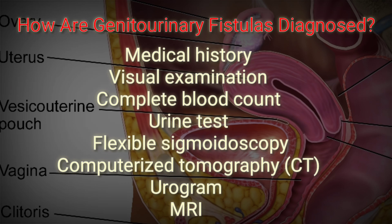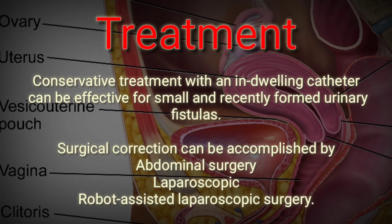Surgery is often needed to correct a fistula leading to the vagina. Conservative treatment with an indwelling catheter can be effective for small and recently formed urinary fistulas. Surgical corrections can be approached in different ways, including abdominal surgery or laparoscopic and robot-assisted laparoscopic surgery.